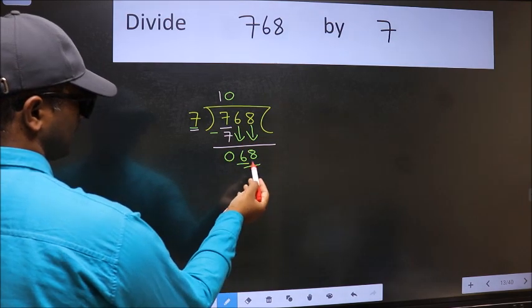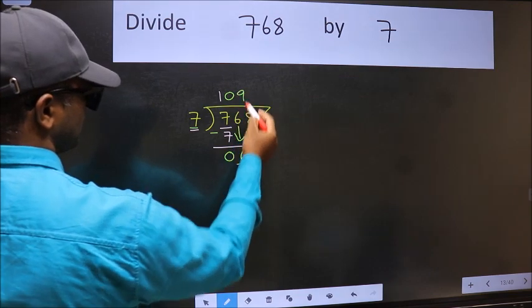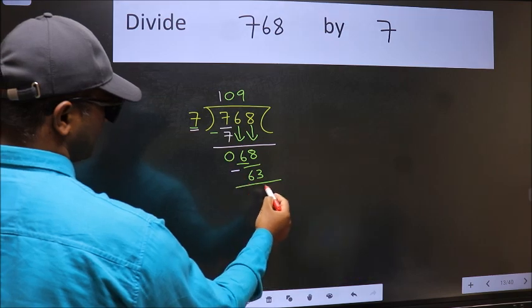Now 68. A number close to 68 in the 7 table is 7 nines 63. Now we should subtract. We get 5.